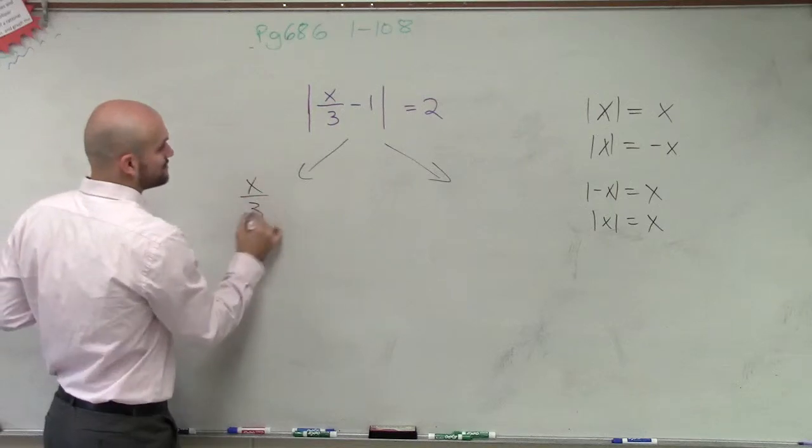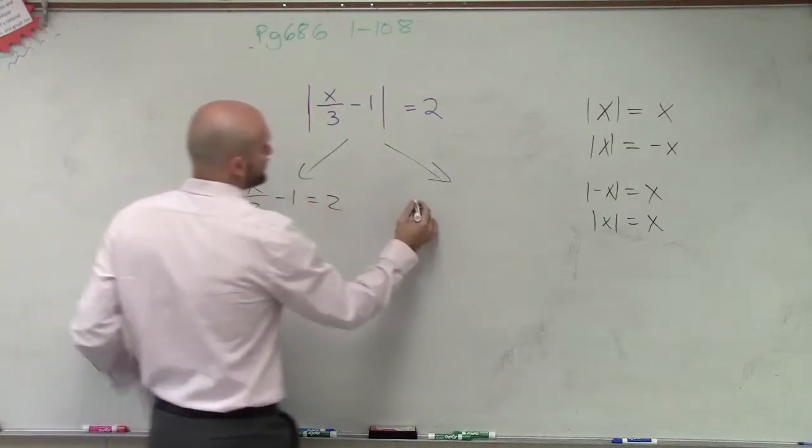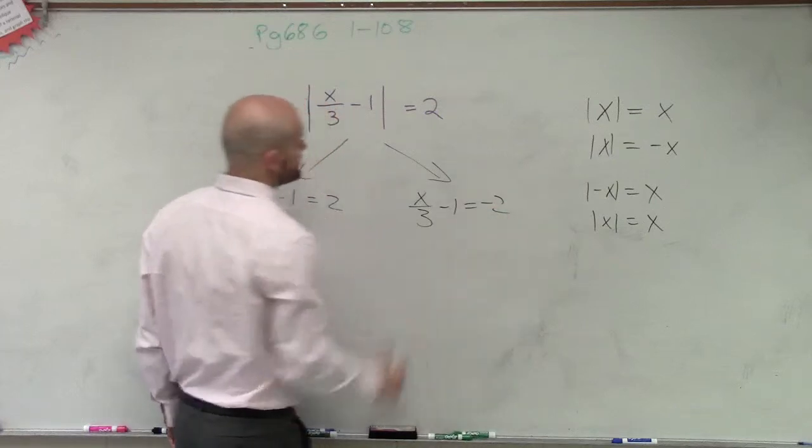We have to look at solving it for x over 3 minus 1 equals 2, and x over 3 minus 1 equals negative 2.